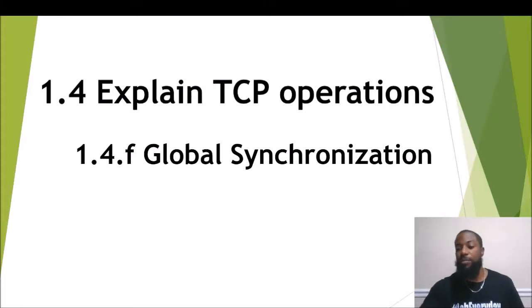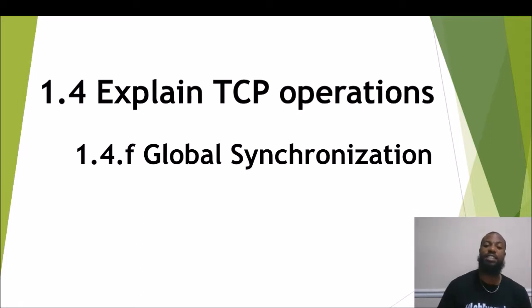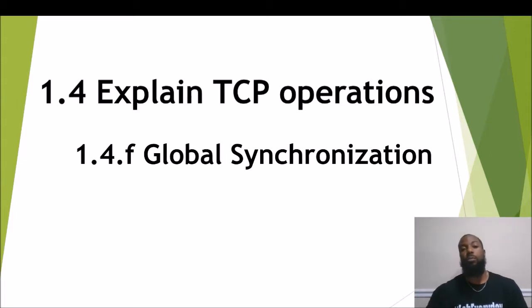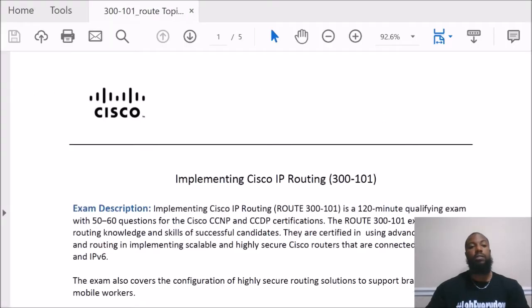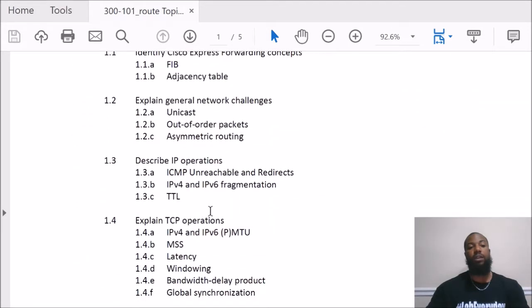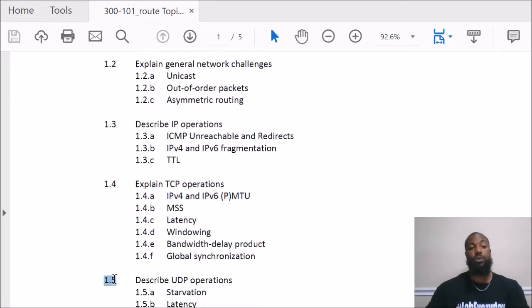What's up, it's your boy The Network. Today's topic is global synchronization, which is section 1.4F of the CCNP Route exam, exam code 300-101 version 2.0, subsection under 1.4 'Explain TCP Operations.' Looking at the exam blueprint, we are at 1.4F global synchronization, and after this we'll wrap up and move on to 1.5 'Describe IP Operations.'